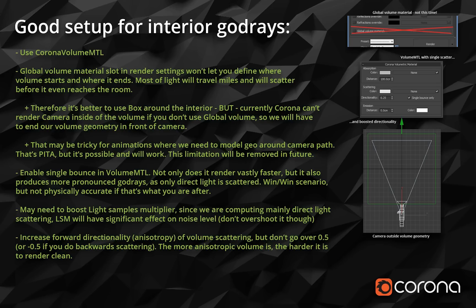If you enable single bounce only, what you're scattering in the volume is just direct light, so if the volume is noisy and the rest of the scene converges quicker, the parameter to increase is not so much the GI multiplier — it's better to first try increasing the light samples multiplier, because that controls sampling of direct light and scattering inside a single-bounce volume. Don't overdo it though — if you set the light samples multiplier too high, like over 8, you might steal too much sampling from the rest of the scene such as GI or anti-aliasing and mess up convergence.